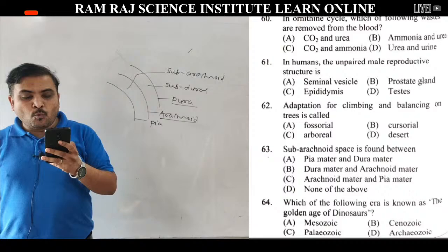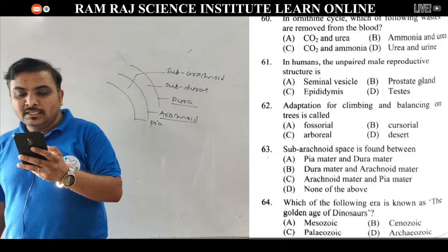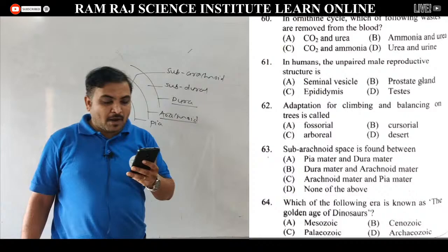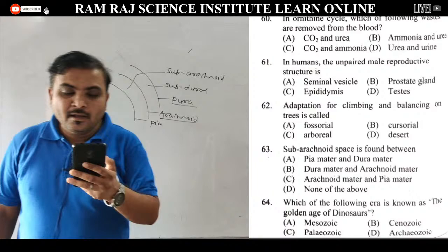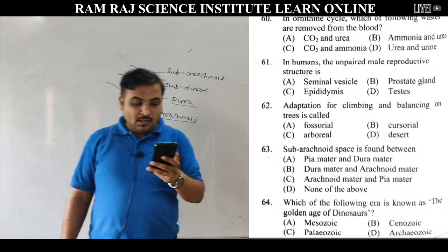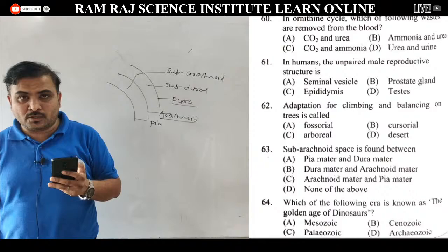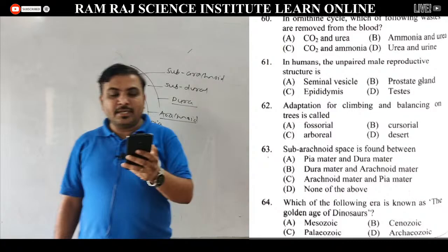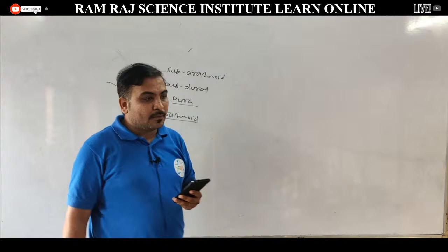Question 64: which era is known as the golden age of dinosaurs. Options हैं cenozoic, mesozoic, paleozoic और archiozoic. Mesozoic era is the golden era — golden age of reptiles. Jurassic और Triassic period में dinosaurs dominantly मिलते हैं. तो answer है mesozoic.